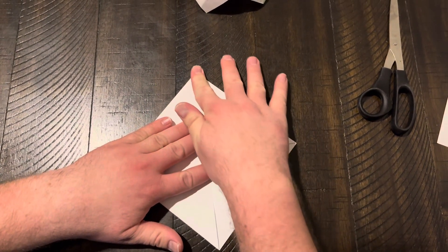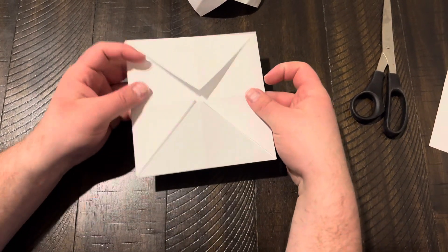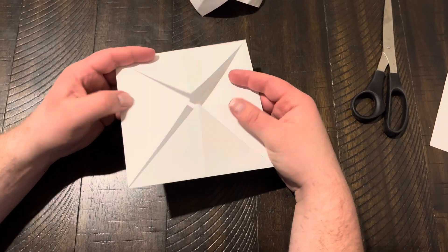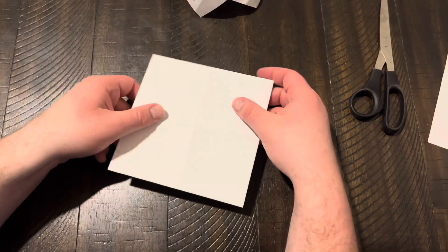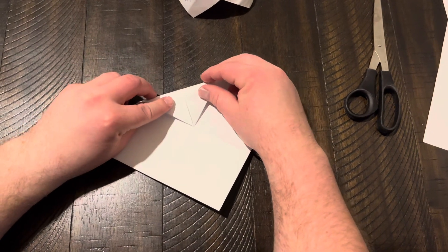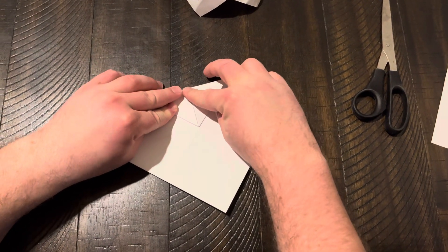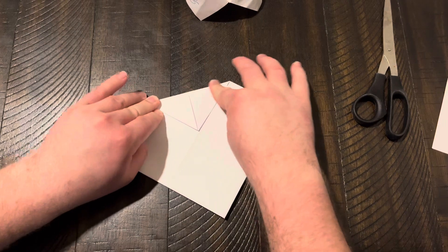So now we've got the four corners folded into the middle. We flip it over and we do the same thing. We take this corner, bring it to the middle.